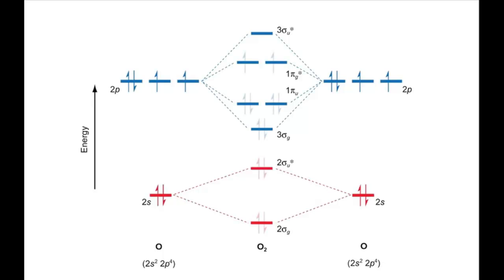There are 12 electrons to put into the molecular orbitals, 6 from each oxygen atom. Filling from the bottom upwards using the Aufbau principle means the orbitals are filled up until the pi antibonding orbitals, which have 1 electron in each, consistent with Hund's rule. It's these unpaired electrons that give rise to the paramagnetism of O2.